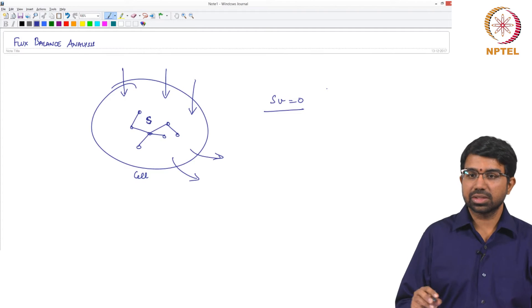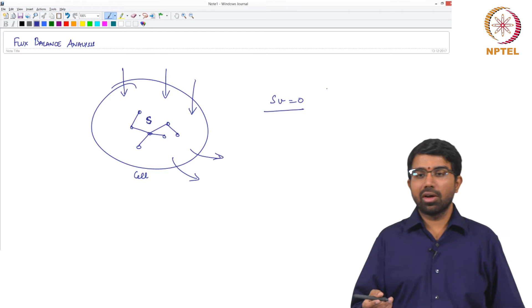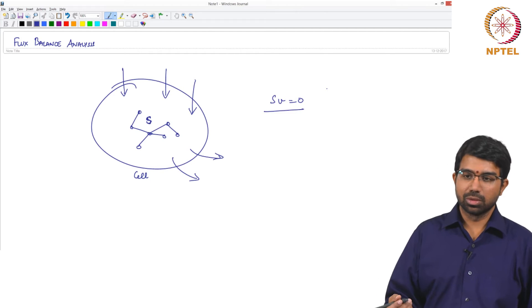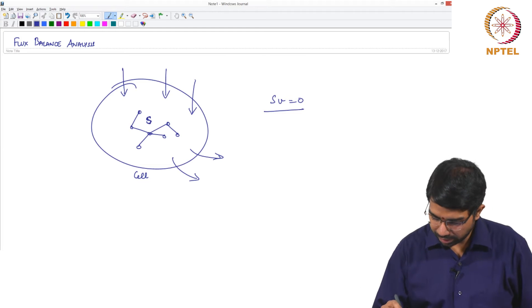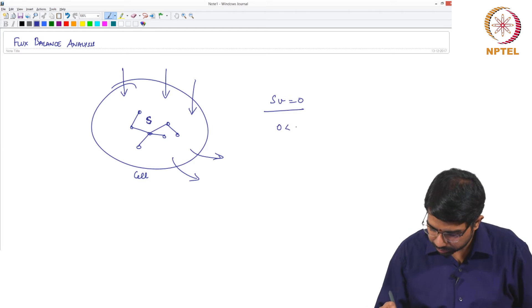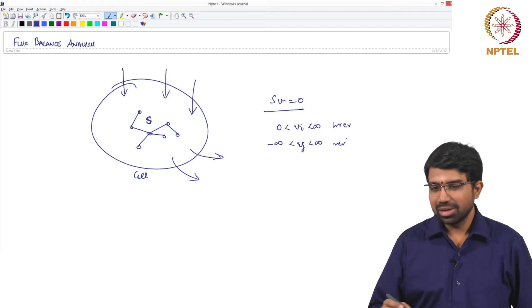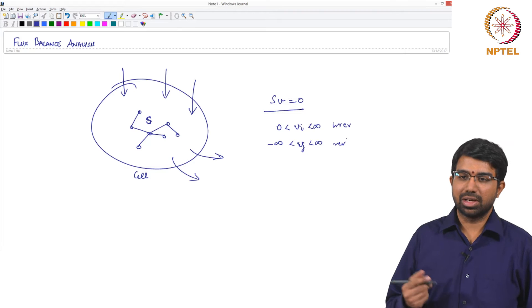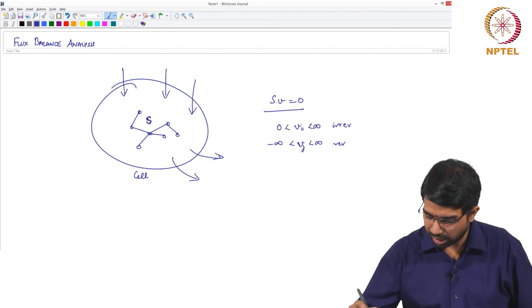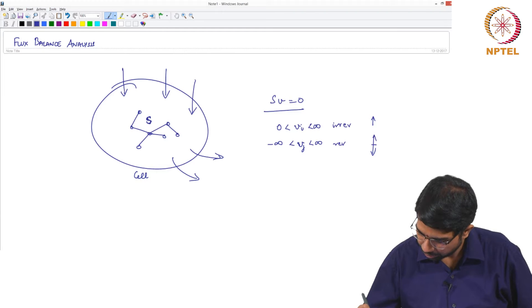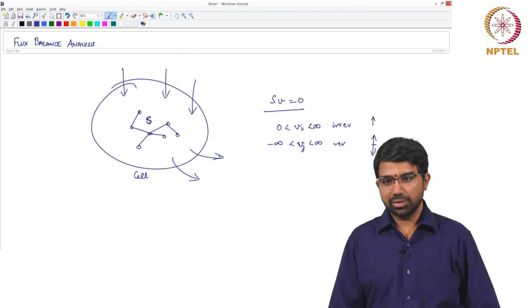Why? It arises from stoichiometry. You can only produce 1 mole of fructose from 1 mole of glucose, no other choice. And this is thermodynamics, irreversible and reversible reactions. Let us actually not say infinity but typically some large value. We know that this has to be only in this direction and this can be in either direction.